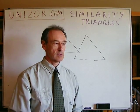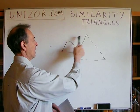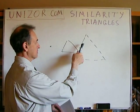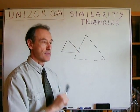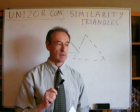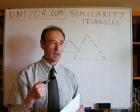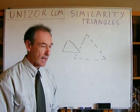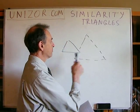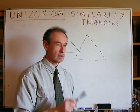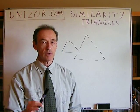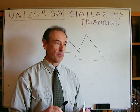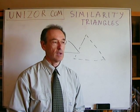The question is whether the reverse is true: if two triangles have three angles equal to each other and sides are proportional — meaning there is the same ratio between the lengths of all corresponding sides — then are they similar? The answer is yes. The proportionality of the sides and equality of the angles is not only a necessary but also a sufficient condition for similarity of triangles.